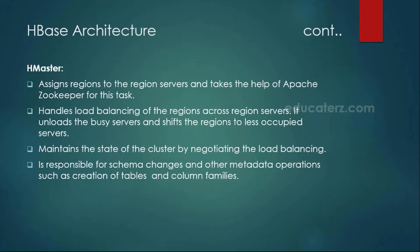The H Master also has to perform load balancing. If one of the region servers is full of regions and you want to store data in another region server, it will choose another one — making sure that the load is balanced across the servers. All these are your slave machines. The H Master is also responsible for any schema changes or metadata changes, such as creation of tables, creating column families, adding column families — any kind of schema changes — and the H Master makes a copy of all of those details.